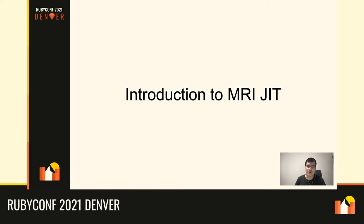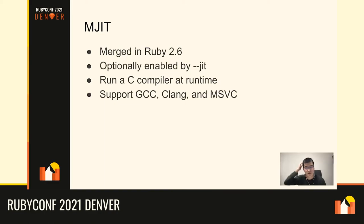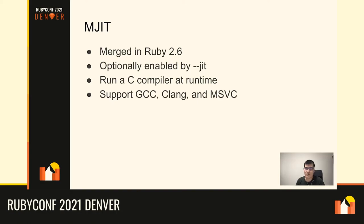The first section is about the MRG introduction. We have basically three kinds of JIT work going on right now. The first JIT is called MJIT, developed by Vladimir Makarov, and was merged in Ruby 2.6. We still have that today. By default it's not enabled — you need to enable it with the --jit option. The main characteristic of MJIT is that it runs a C compiler to generate native code, so you have to have a C compiler available at runtime.